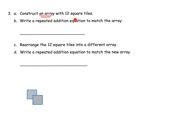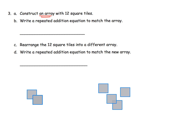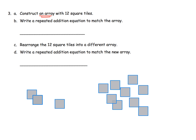The idea here is to construct an array with 12 tiles. So I'm going to count out 12 tiles: 1, 2, 3, 4, 5, 6, 7, 8, 9, 10, 11, 12. So I have 12 tiles here.